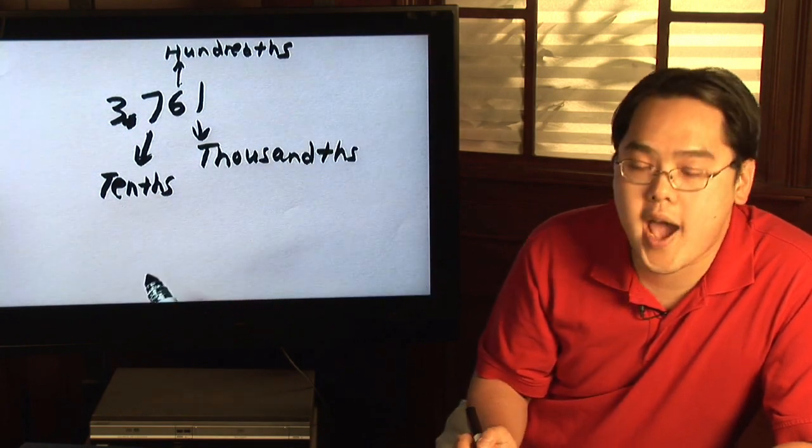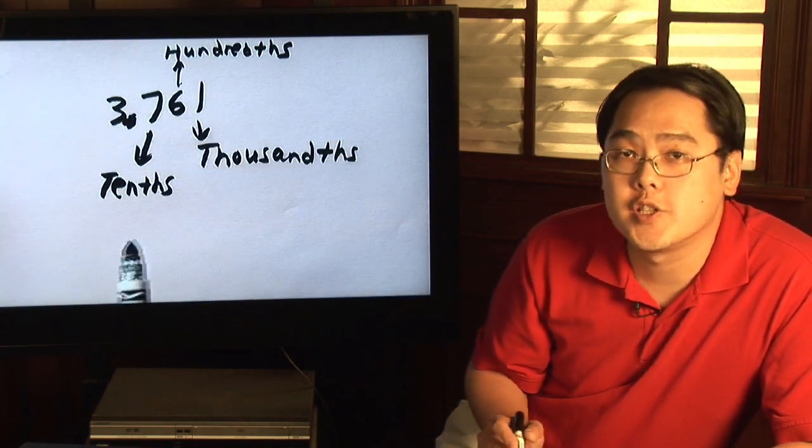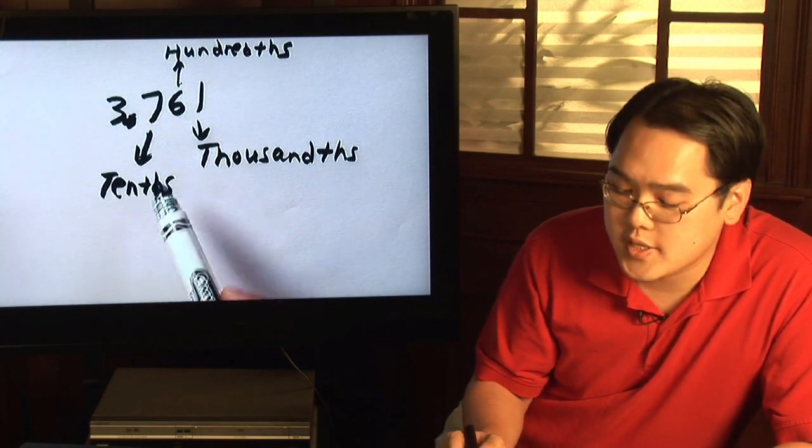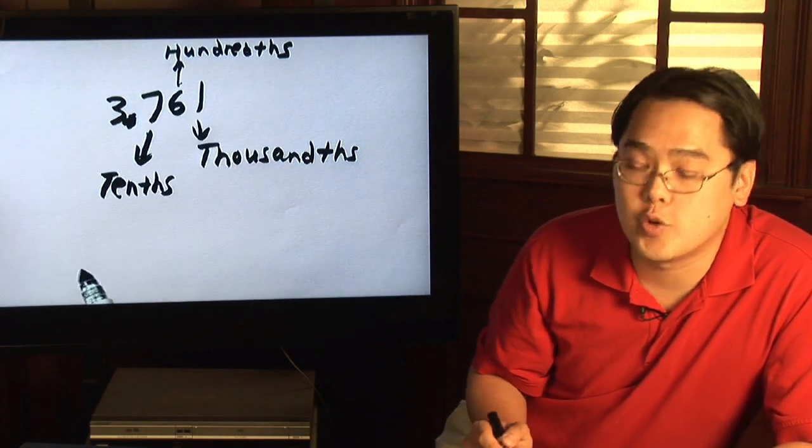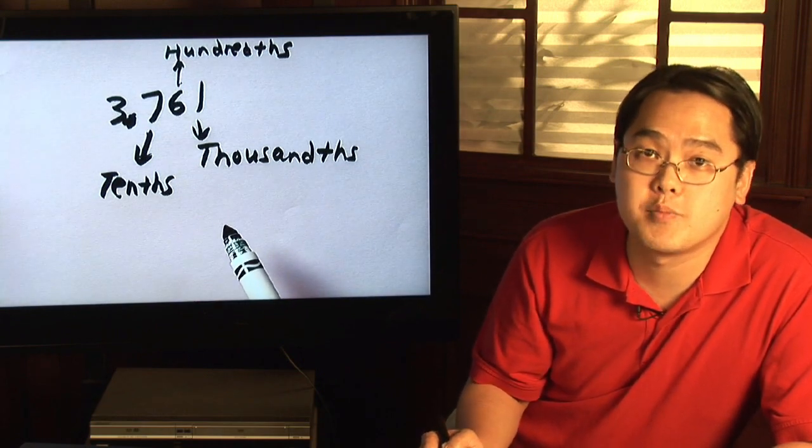So notice a pattern. Tenths, hundredths, thousandths. For every decimal place you go out the smaller the number becomes because tenths represent ten percent, hundredths represent single percents, and thousandths in this case is point one of a percent. Very small.